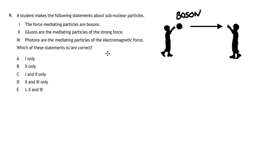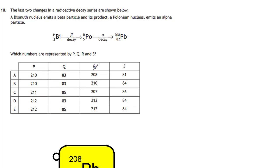Now, knowing that information, we can go back to the equation and see if we can get the correct statements. And here are the statements. A student makes the following statements. The force-mediating particles are bosons. Well, that is correct. Gluons are the mediating particles of the strong force. And that's correct as well. Photons are the mediating particles of the electromagnetic force. And that is correct as well. So we've got three correct statements. And that should give us letter E for our answer.